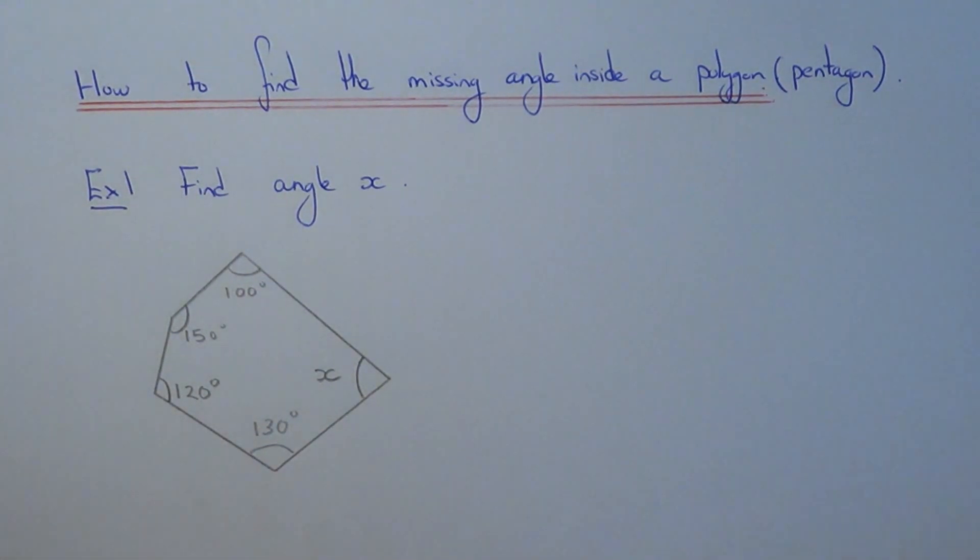Now the first thing we need to do is find out what all the five angles inside a pentagon add up to. This is known as the sum of interior angles.